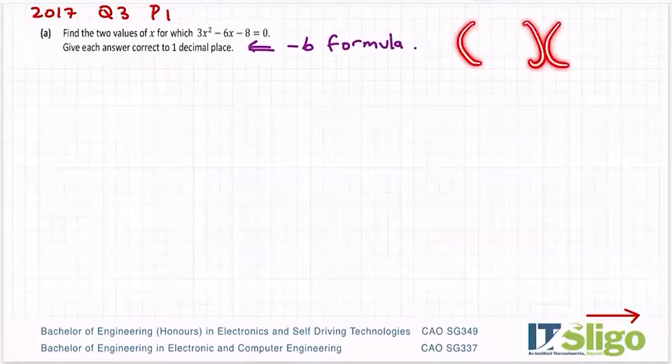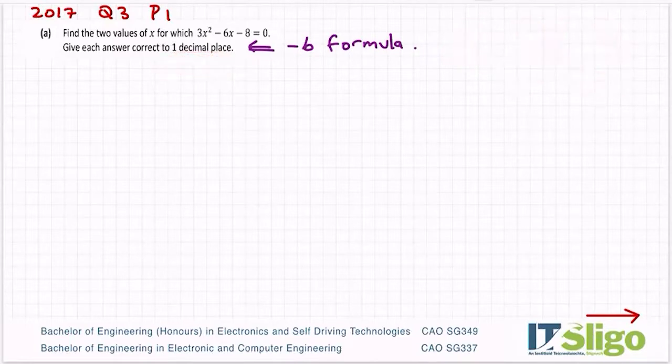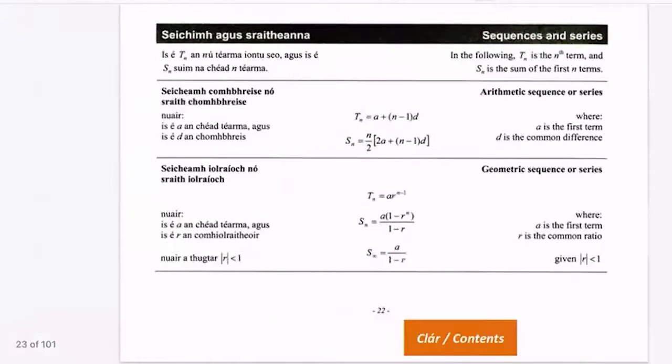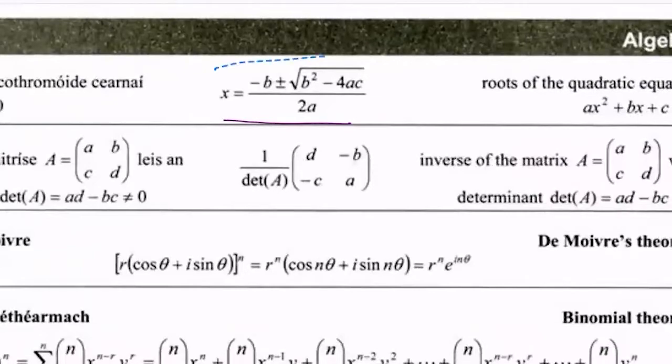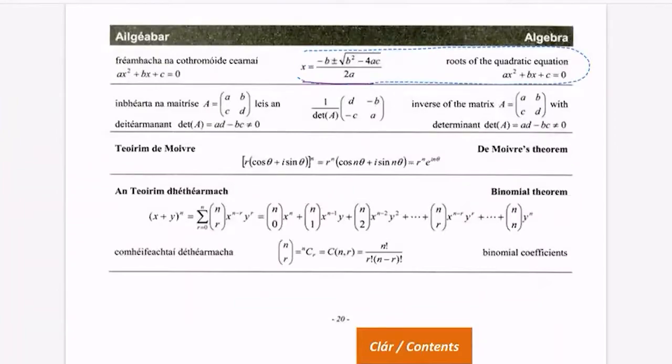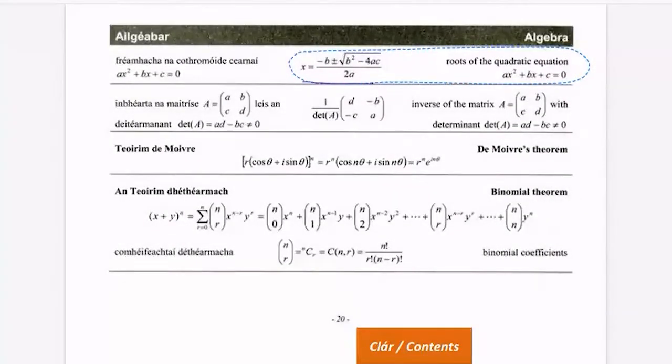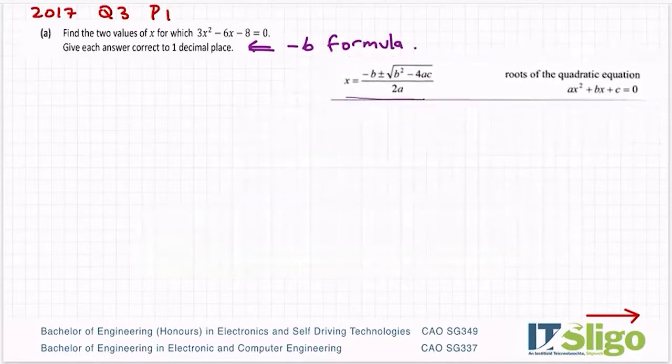It can't really be solved with factorization because there's no whole numbers - I've got decimal point numbers. So when you see that, a little clue is just to go straight for the minus b formula. And the minus b formula is in your log tables up here on the top of page 20.